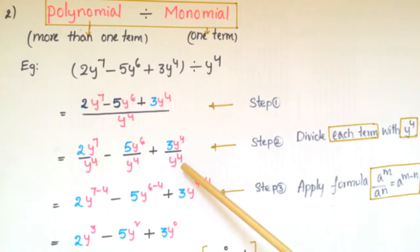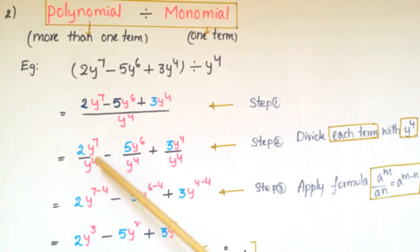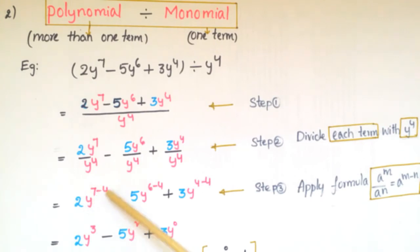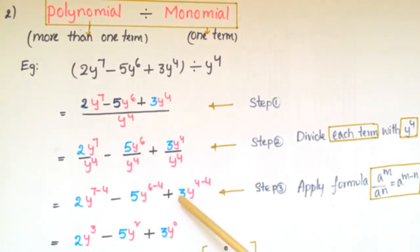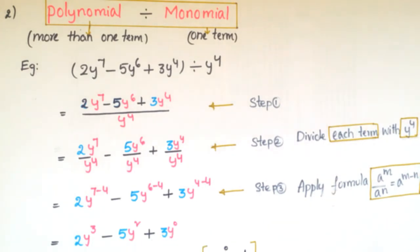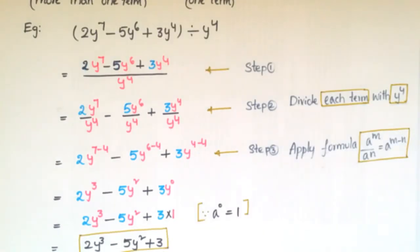Then, 2 times y⁷/y⁴ = 2y^(7−4), since a^m / a^n = a^(m−n). Similarly, −5y^(6−4) and +3y^(4−4), giving us 2y³ − 5y² + 3y⁰.